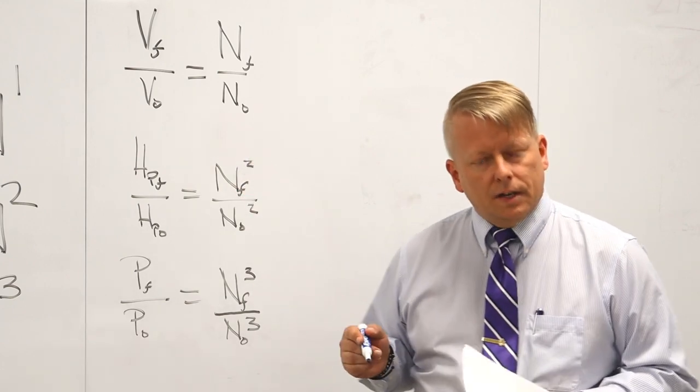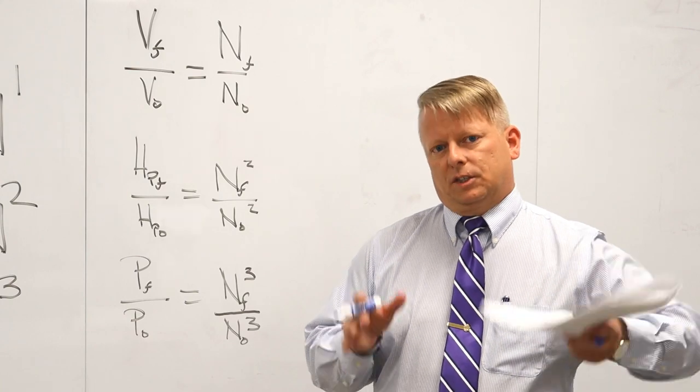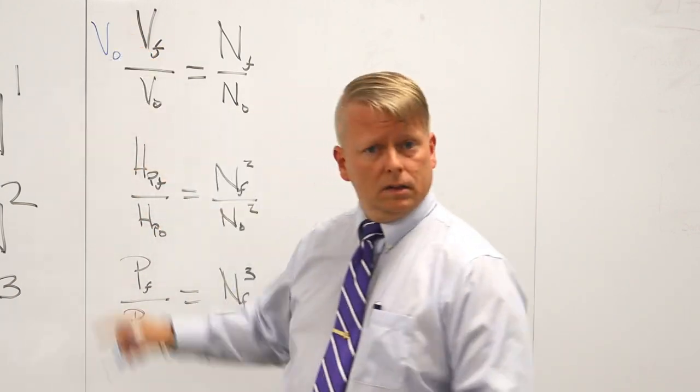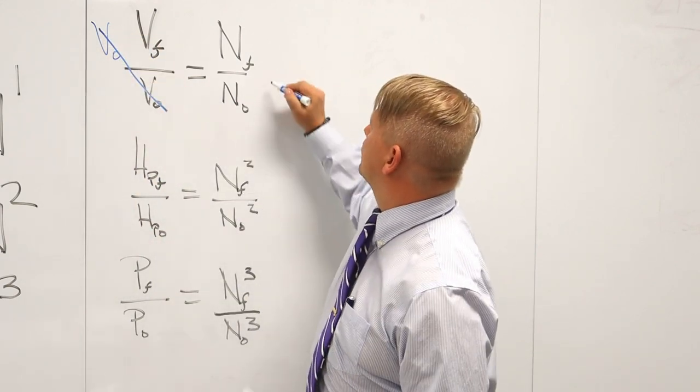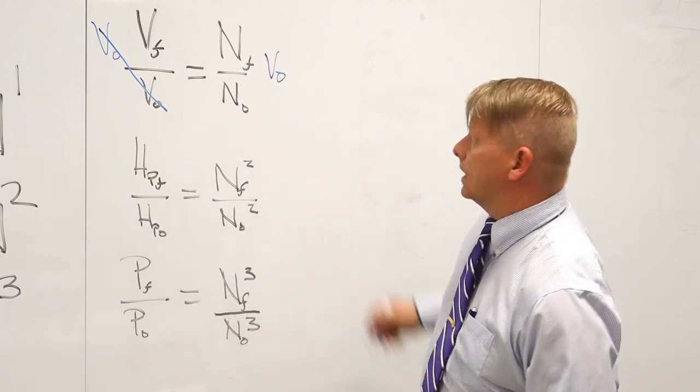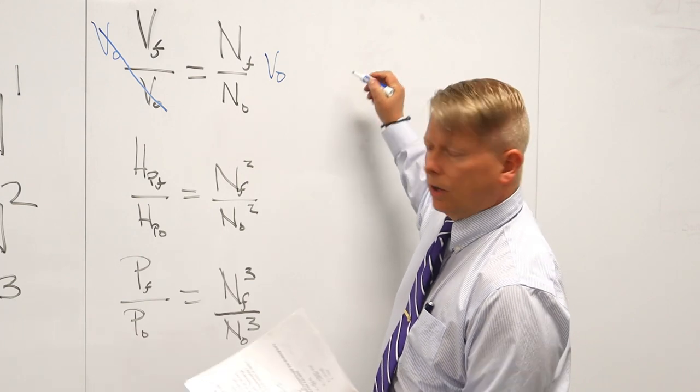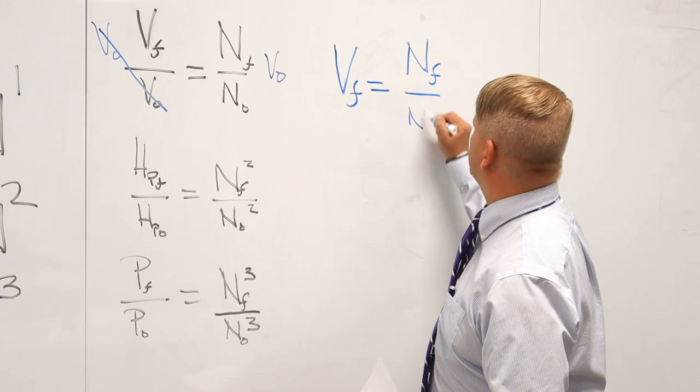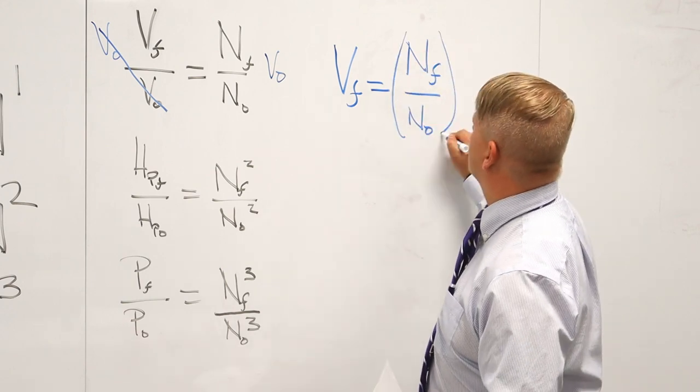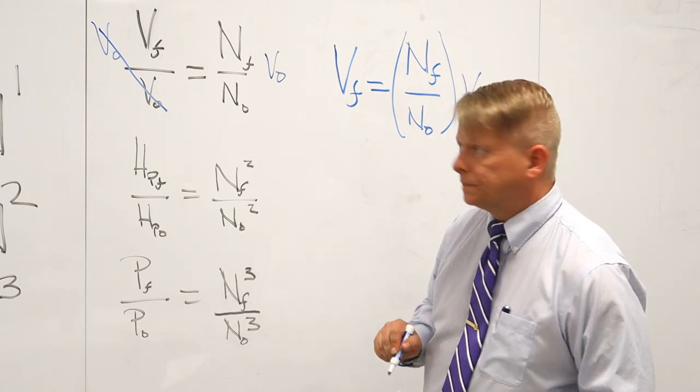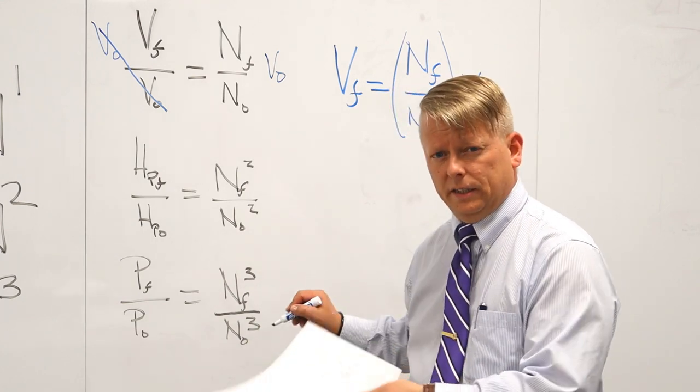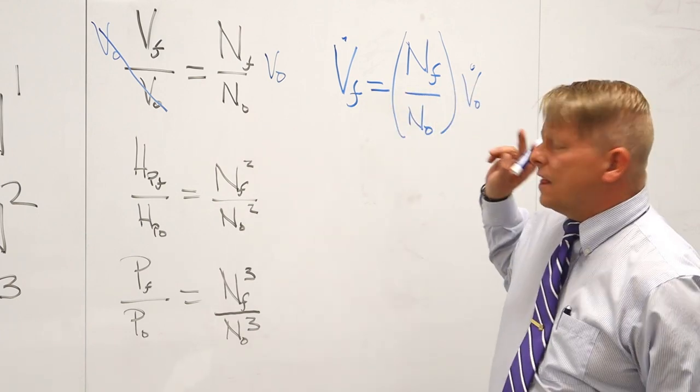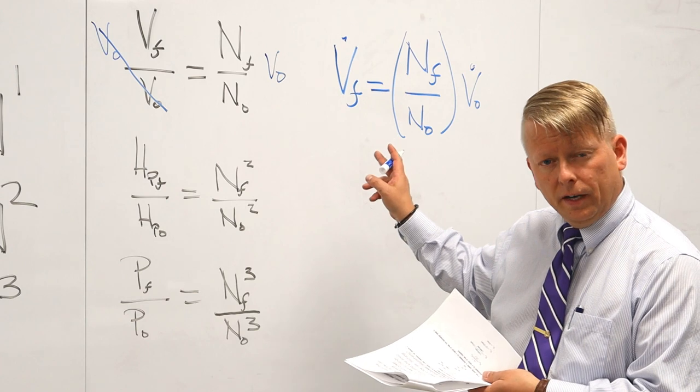I'm gonna do the first one kind of longhand and then we'll simplify it. If I want to find out based on a change in speed what happened to volumetric flow rate, I'll need to rearrange. So I'm gonna multiply by initial, these will cancel, that means I have to multiply on the opposite side here. So once I have this set up, the final equation to figure out what my final volumetric flow rate is: final volumetric flow rate is equal to final speed over initial speed times whatever the initial volumetric flow rate was.